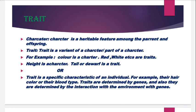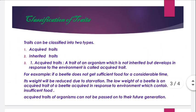So dear students, we are classifying traits into two types. One is the acquired trait and the second is the inherited trait. Acquired traits are those which never get transmitted from parent to offspring — they develop in response to the environment. The traits which develop in response to the environment, which an organism acquires due to variations or changes in the environment, we call those acquired traits.